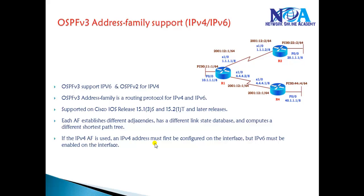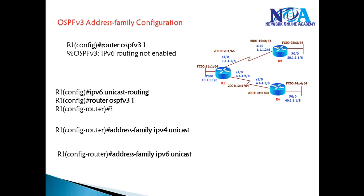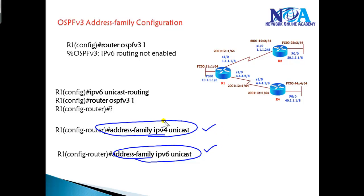To summarize: OSPFv3 address family support, introduced in IOS 15.x, allows one OSPF process to handle both IPv4 and IPv6. Configurations outside the address family apply globally to both. Use 'address-family ipv4 unicast' or 'address-family ipv6' for protocol-specific settings such as router ID or other interface/protocol parameters.